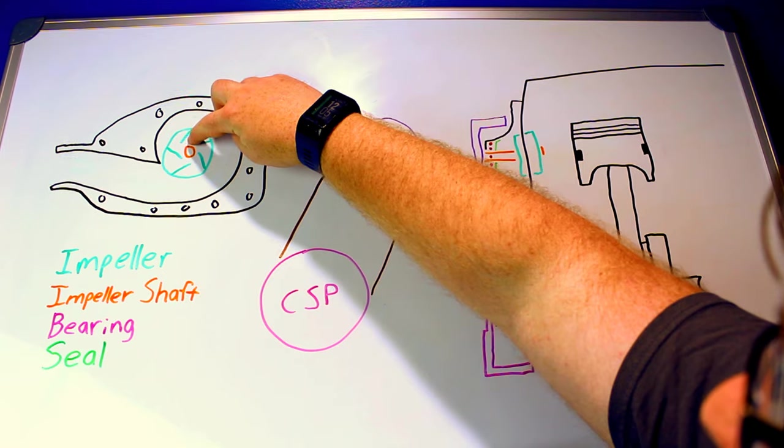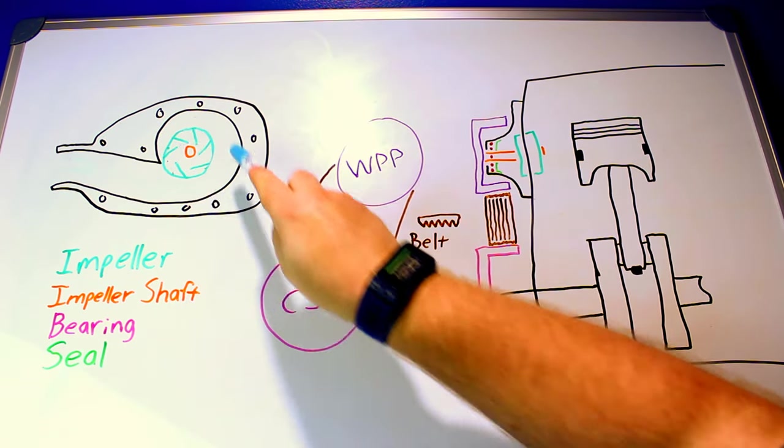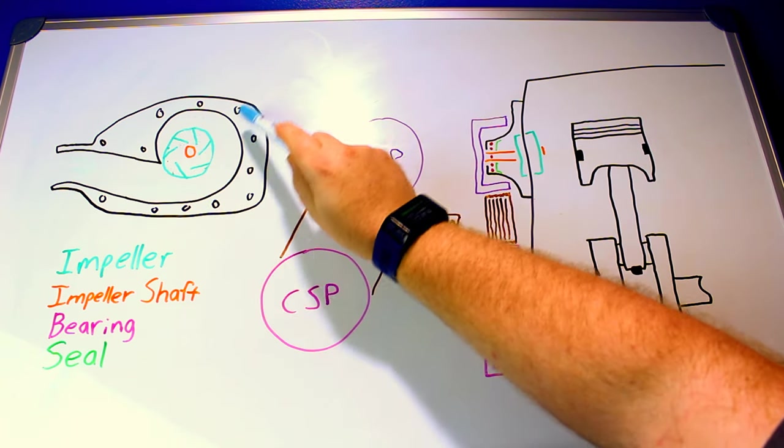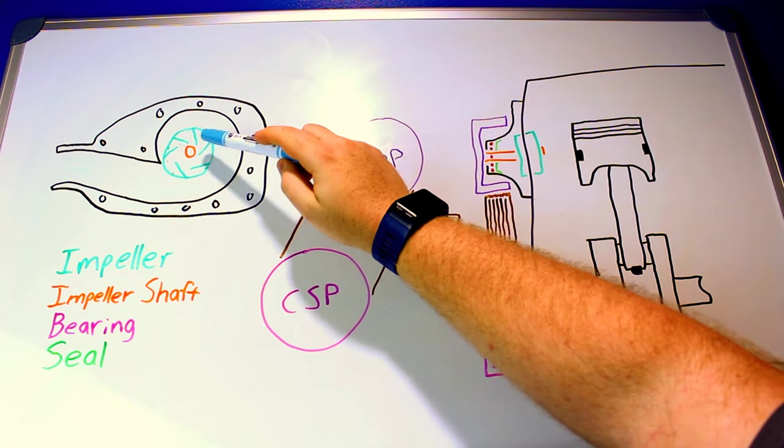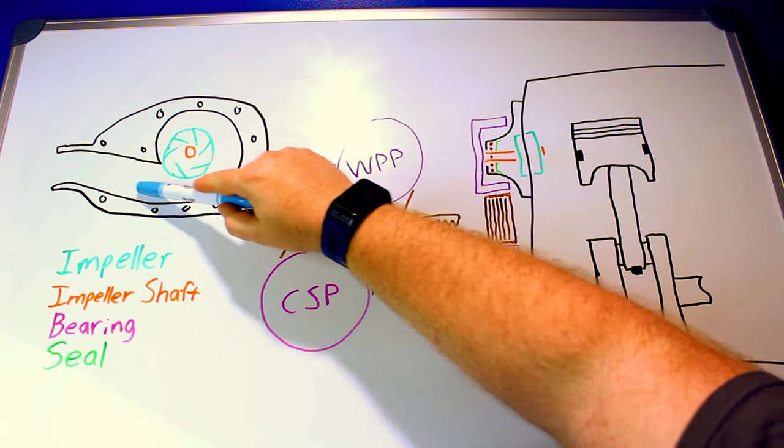I'm just realizing that I drew these in the wrong direction so I'm just going to correct that real quick. So this is going to spin in this direction so these veins can pick up water from the inside and use centrifugal forces to push it to the outside and it will be drawn out in this direction and exit this way.